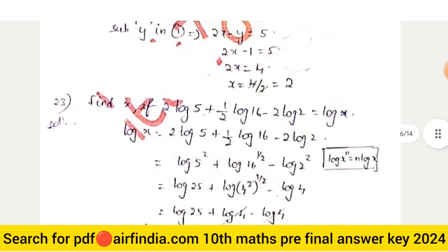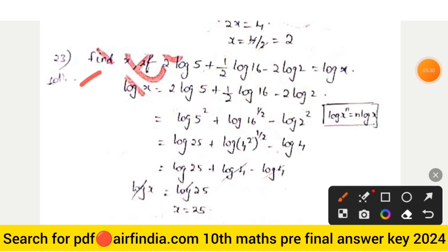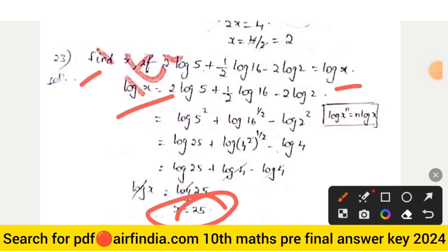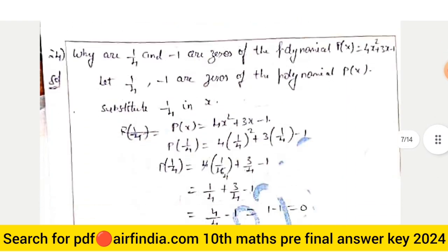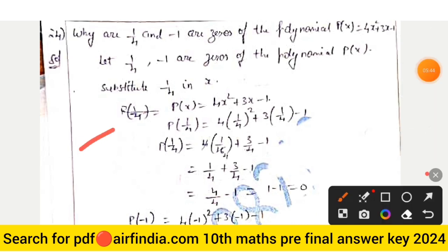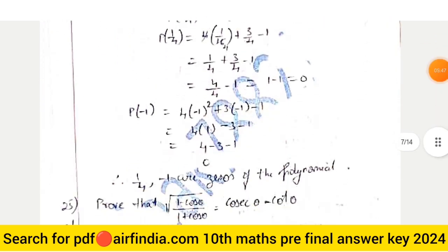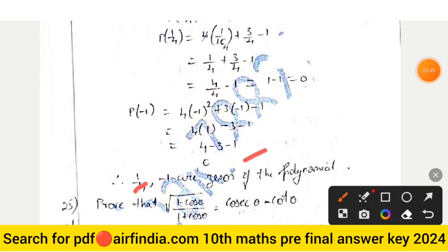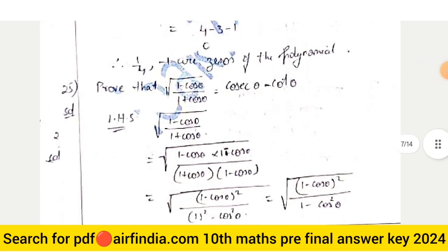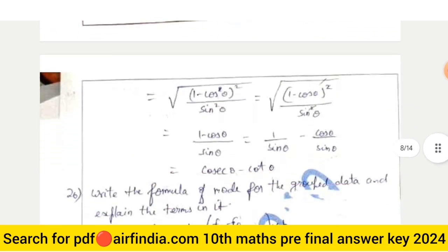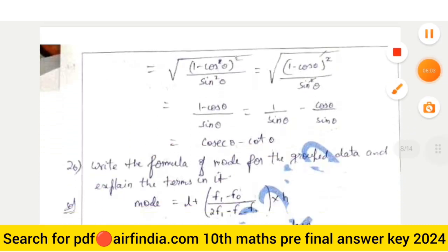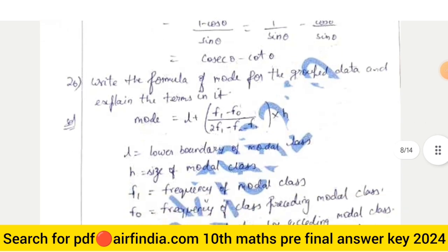Question number twenty-three: find x if 2 log 5 = log x, so log x = log 25, giving x = 25. Question twenty-four: the probability value p is equal to 1/4. Question twenty-five: prove that √[(1 − cosθ)/(1 + cosθ)] = cosecθ − cotθ, taking the LHS and simplifying to get cosecθ − cotθ.